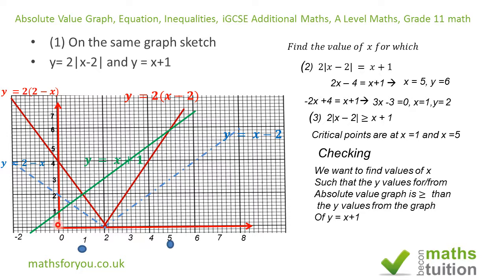All I want to do now is find, for a given X value, whether the equivalent Y values for the green and red graphs compare correctly. At X equals 0, the Y value for Y equals X plus 1 is 1, and the Y value for Y equals 2 times absolute value of (X minus 2) is 4. So values of X less than 1 are valid, because the Y values for the absolute value graph are greater than the Y values for Y equals X plus 1.